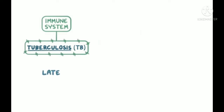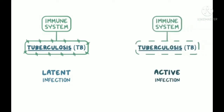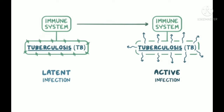It often remains latent, or dormant, as opposed to active, which usually causes symptoms and can be spread to others. If the host immune system becomes debilitated at some point down the road, like with AIDS or some other illness, or as a person grows older, it can be allowed to reactivate — basically wake up and become very serious, especially if it spreads throughout the body.